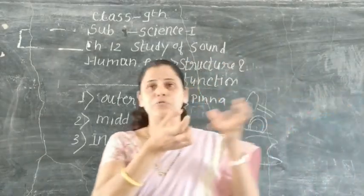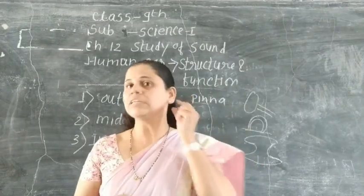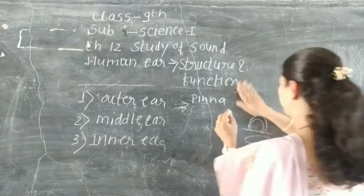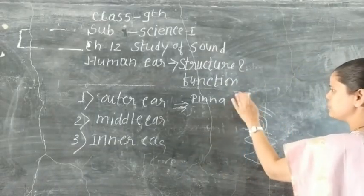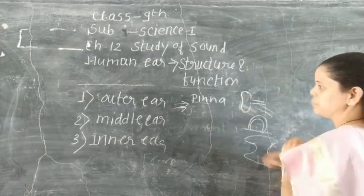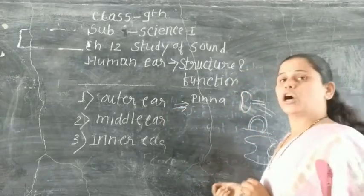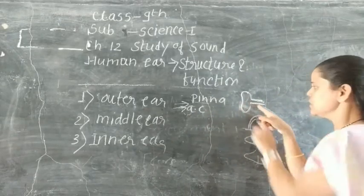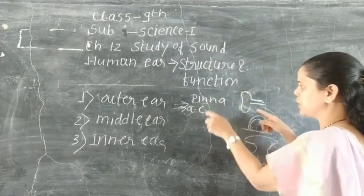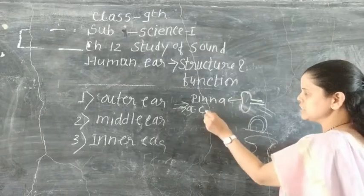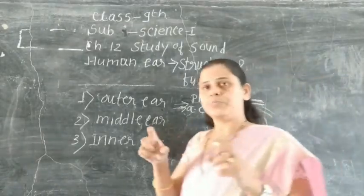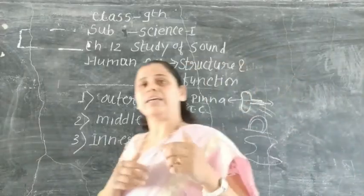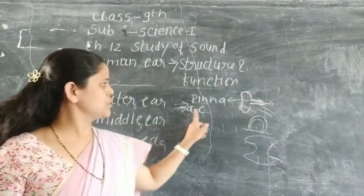This pinna collects the sound waves. The shape of the pinna is funnel-like. The second organ of the outer ear is the auditory canal, which is just like a tube. When the pinna collects the sound waves, those sound waves enter into the ear and travel through this canal into the middle ear and inner ear. This is called the auditory canal.